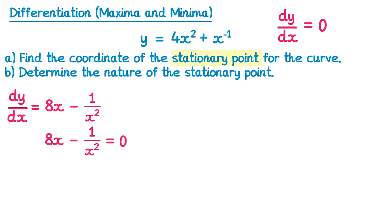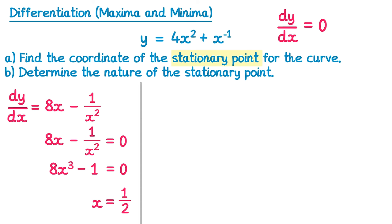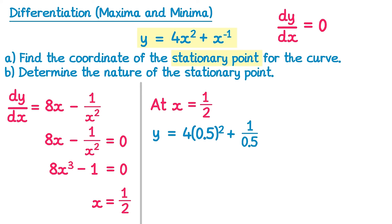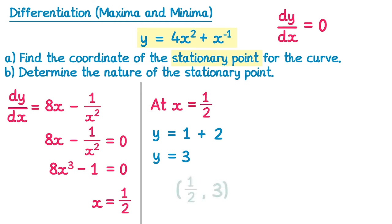To solve, multiply both sides by x squared: on the left you get 8x cubed, and the x squared cancels with the denominator leaving minus 1, and the right side gives 0. Adding 1 to both sides and dividing by 8 gives x cubed equals 1 eighth. Cube rooting gives x equals 1 half. Substituting back into y equals 4x squared plus x to the power negative 1: y equals 4 times (1/2) squared plus 1 over (1/2), giving 1 plus 2 equals 3. So the stationary point is (1/2, 3).